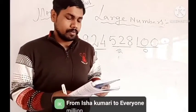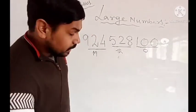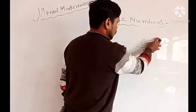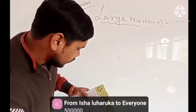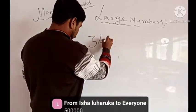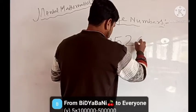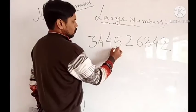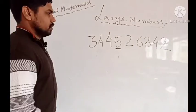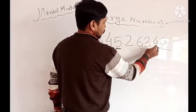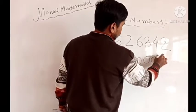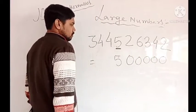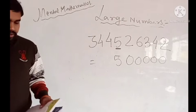The place value of 5 in the given number — the number is 3, 4, 4, 5, 2, 6, 3, 4, 2. In this number, we are asked to find the place value of 5. Counting from the right: 1, 2, 3, 4, 5 — so 5 is in the 5th position, which means the place value is 5 multiplied by 10,000, so the answer is 50,000.